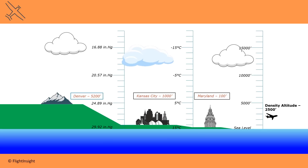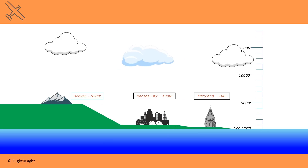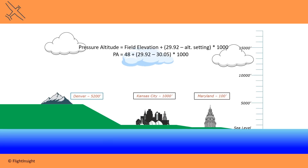How it's calculated gives us some trouble sometimes — it's a two-step process. First, we need to take the current altimeter setting, 30.05, subtract it from 29.92, and multiply by a thousand. This gives us negative 130 feet. We apply this to our current altitude — 48 feet as the field elevation at College Park — to get negative 82 feet. This figure is our pressure altitude. The actual formula is a bit more complex, but this is a great rule of thumb that works for our purposes.